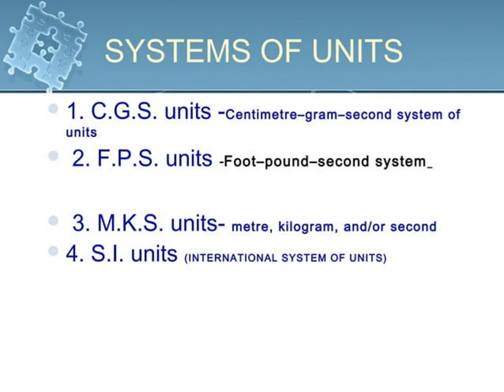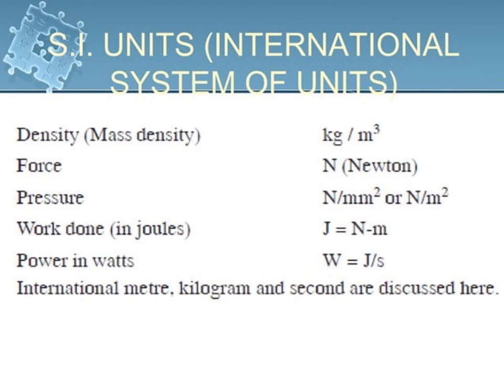We follow four systems of units: CGS units, FPS units, MKS units, and finally the standard international unit. CGS means Centimeter-Gram-Second system. FPS means Foot-Pound-Second system. MKS means Meter-Kilogram-Second system. SI units means International System of Units, which we follow now. Examples of SI units: density = kg/m³, force = Newton, pressure = Newton per meter squared, work = Joule (Newton·meter), power = Watts.